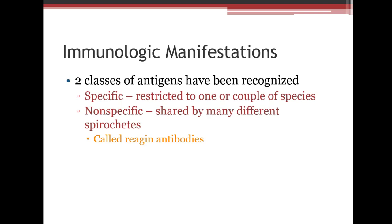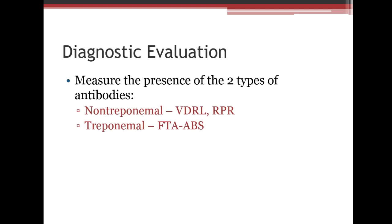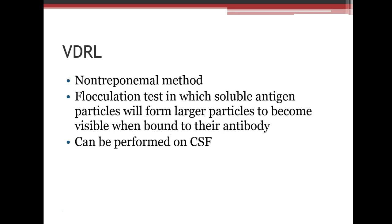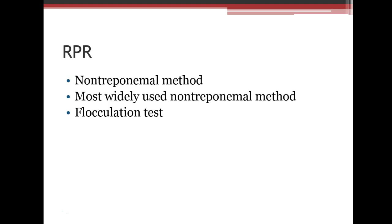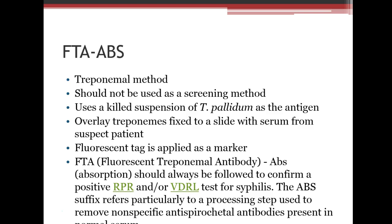There are two classes of antigens recognized: specific and nonspecific. The nonspecific antibodies are called reagin antibodies — when testing serum for syphilis, we test for this protein called reagin, not syphilis itself. Non-treponemal tests include the VDRL (traditionally done on spinal fluid) and the RPR, or rapid plasma reagin (done on blood). The treponemal-specific test is the FTA-ABS, or fluorescent treponemal antibody test, which is used as a confirmatory test after a positive RPR or VDRL.